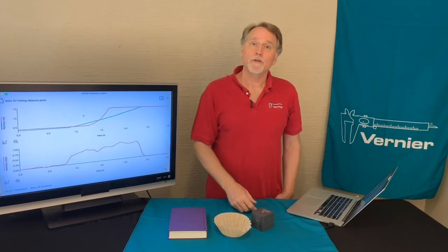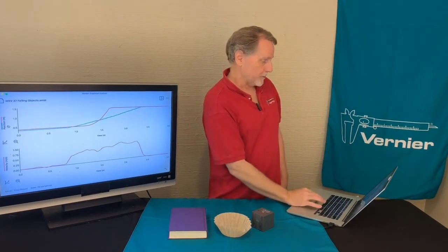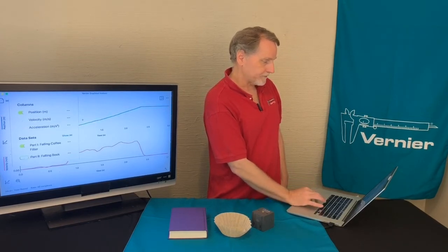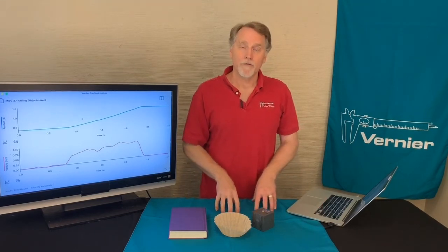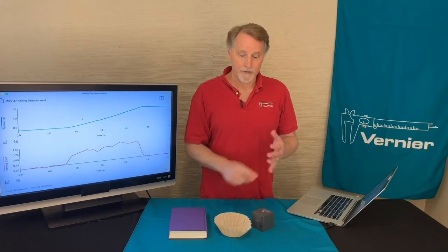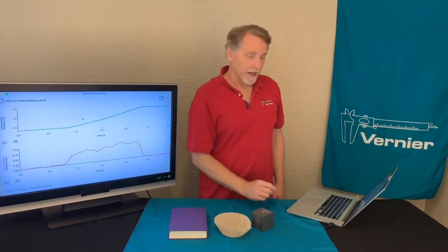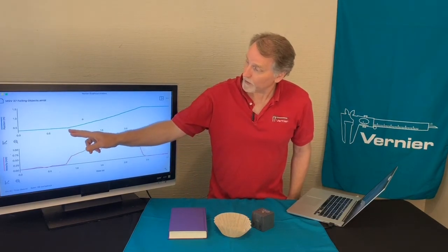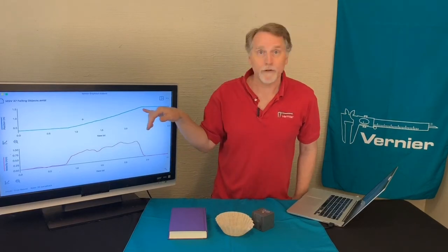Let me show you how to actually analyze this data. I'm going to do this one trial at a time, so I'll turn the falling book off and click back on the graph. Looking at the graph, this point is where the coffee filter was dropped and this is where it hit the floor.